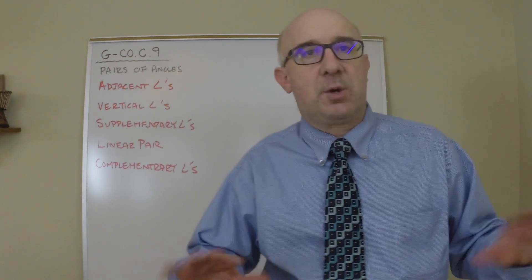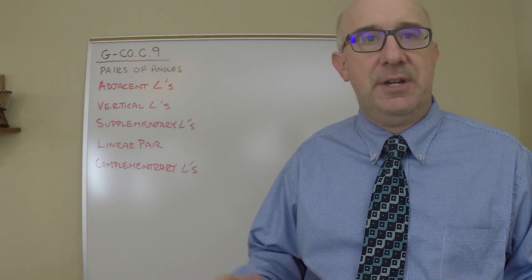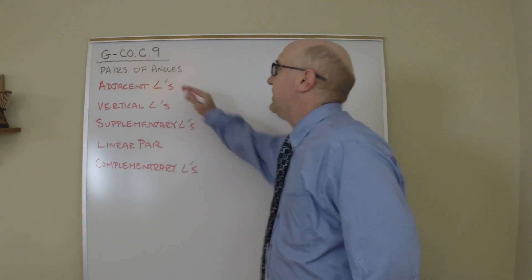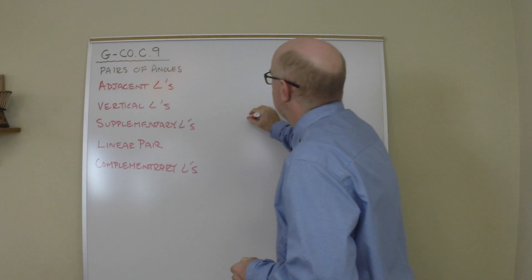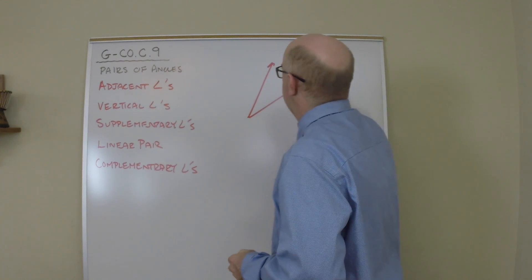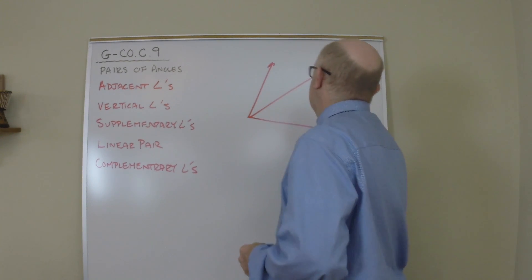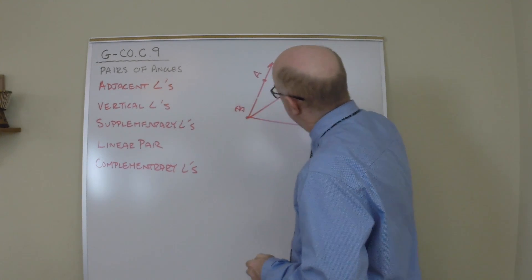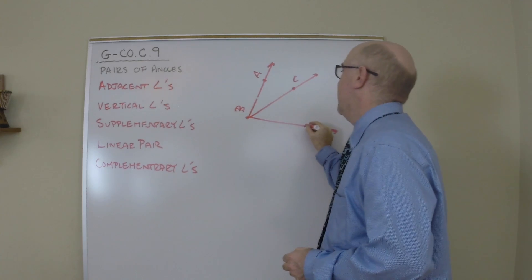So let me just quickly go through these definitions and then we'll look at the relationships involved. In the case of an adjacent set of angles, let's draw a relationship here: A, B, C, and D.